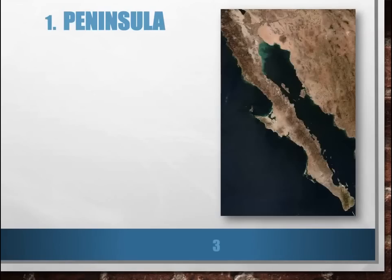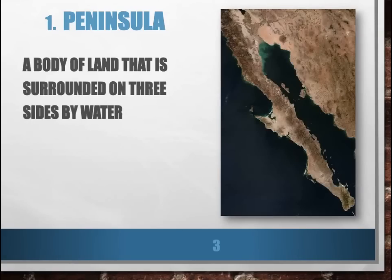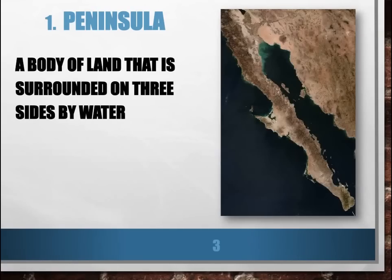There will be two vocabulary words used in this lesson. The first one is peninsula, and a peninsula is a body of land that is surrounded on three sides by water. The example we have in today's picture is the Baja California Peninsula of Mexico, surrounded on three sides by water.